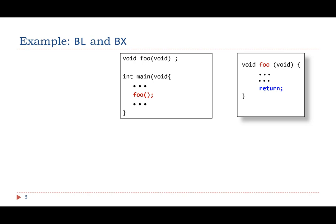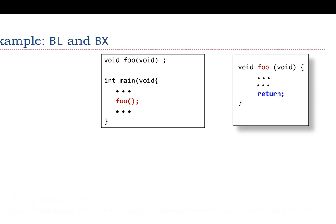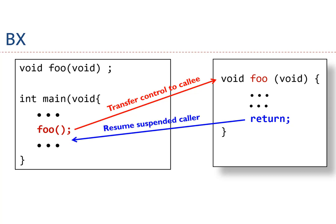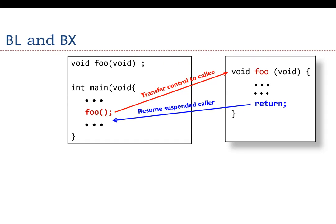Let me use another example to illustrate how BL and BX work. When the main program calls the foo function, the control is transferred to the callee. Here, we say the main function is the caller and the foo function is the callee. When the foo function returns, the control is transferred back to the caller so that the main function can resume the execution.